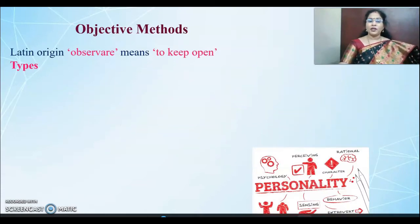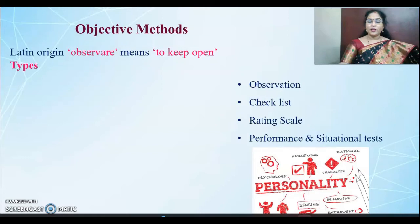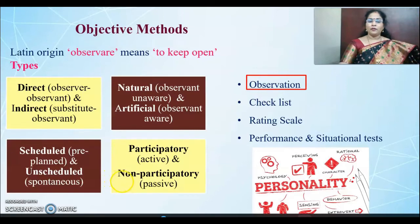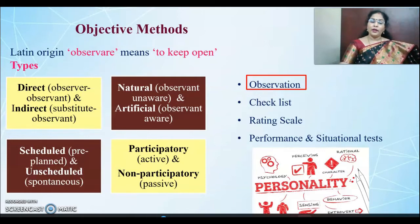The next method is the objective method: observation, checklist and rating scale, performance and situational analysis. There are four types of observation. The mere word observation came from a Latin origin, 'observer,' which means to keep open. There are direct observation and indirect observation. In direct observation, the observer will directly observe the observant. In indirect observation, instead of going directly, the observer will have a substitute to observe the observant.